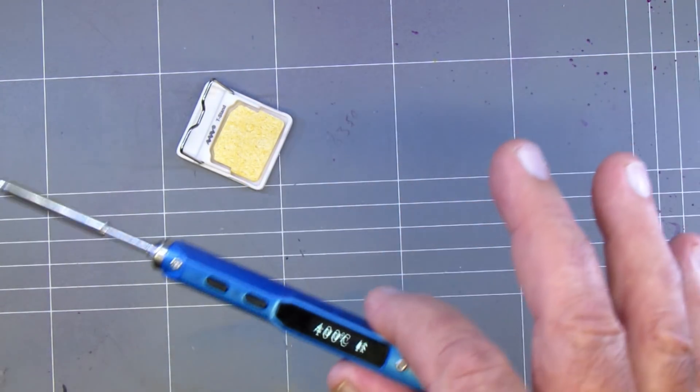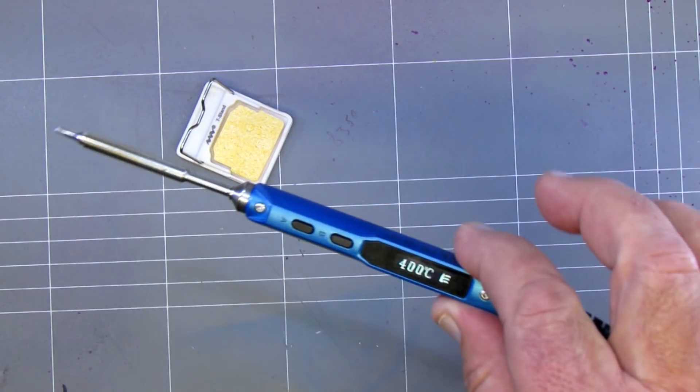That is pretty cool, so it saves a bit of juice on the battery and it's not going to destroy your tip.